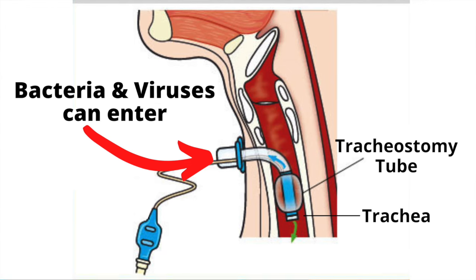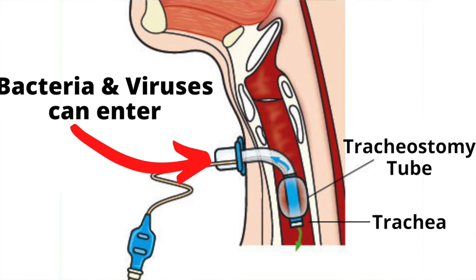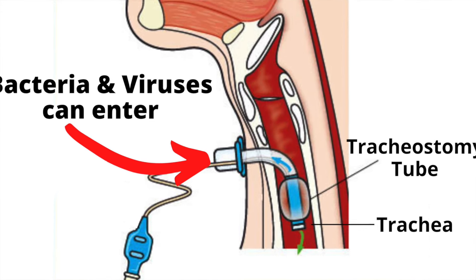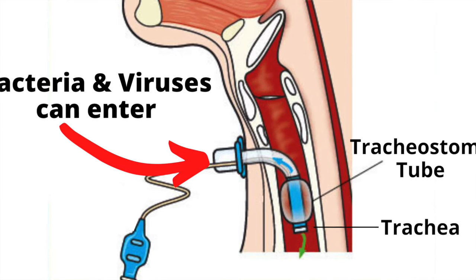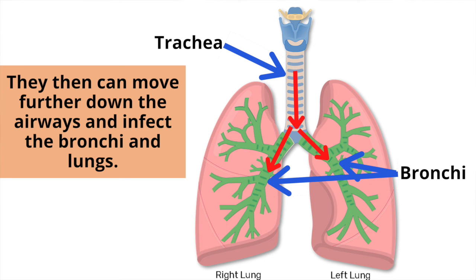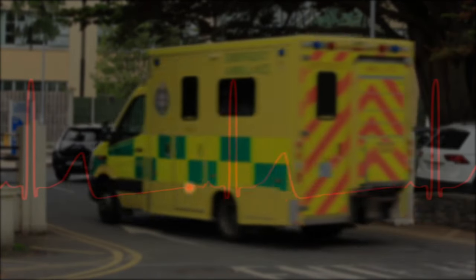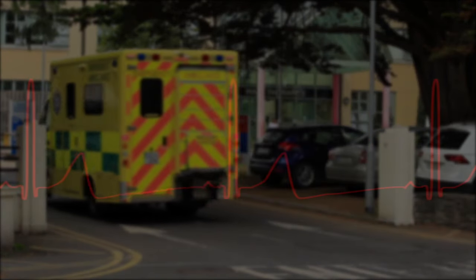A third way tracheitis can occur is when a person breathes in viruses and bacteria in the air. Once the bacteria is inside the trachea, it can also move farther down the airways and infect the bronchi and lungs. This may lead to pneumonia.